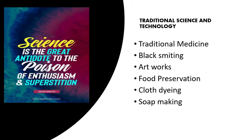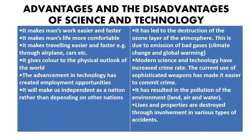We have food preservation — traditional science and technology had various ways of preserving food, like salting, smoking, and boiling. All these methods were used in the olden days. We have cloth dyeing — people had a way of dyeing cloth with the help of local dye from wood. And finally, soap making — they produced soap from palm oil, plantain stem, and some other additives. These are the various forms of traditional science and technology.